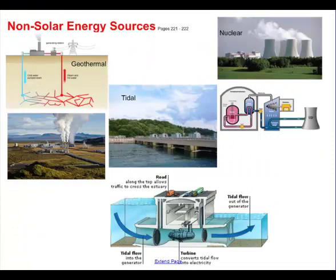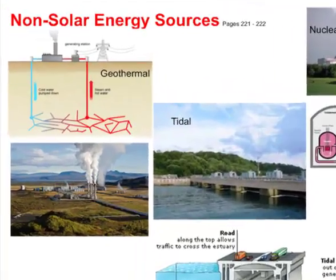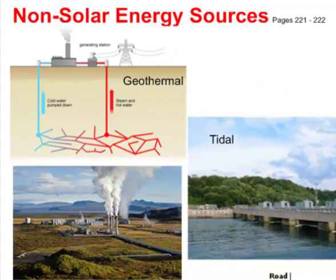Then we have non-solar sources, where the sun is not involved. Geothermal energy is one you may not have thought of. Deeper inside the Earth, temperatures can get incredibly hot. The technique involves injecting cold water down into these hot zones, where it gets heated up by the Earth and comes back up very hot, even as steam. We then use the steam to spin a turbine, which is connected to a generator that makes electricity.